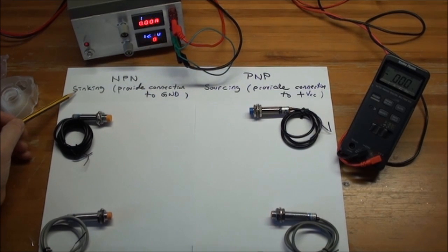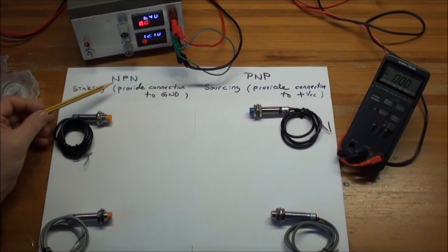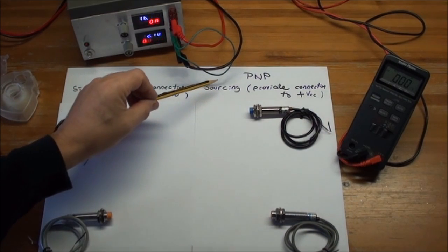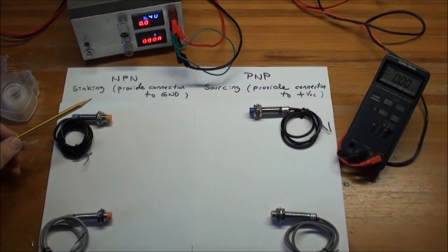And essentially what they do is upon triggering, they will provide a connection to ground. And the same goes, or the opposite, the mirror image for PNP, they're called sourcing. So when they're triggered, they provide a connection to plus. So let's see how that works out in practice.